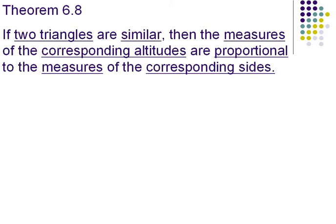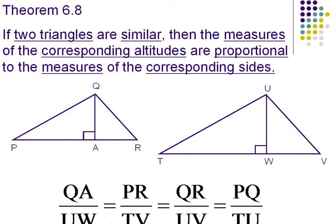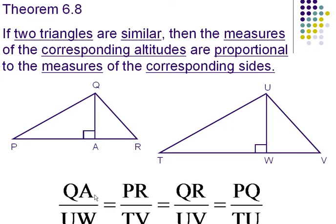Theorem 6.8, if two triangles are similar, then the measures of the corresponding altitudes are proportional to the measures of the corresponding sides. This picture right here will show that. Here we have two triangles, and we have their altitudes drawn. And according to the theorem, say we have altitudes QA compared to UW, that would be the same as the fraction of PR to TV, QR to UV, and PQ to TU. All those parts and sides are proportional.